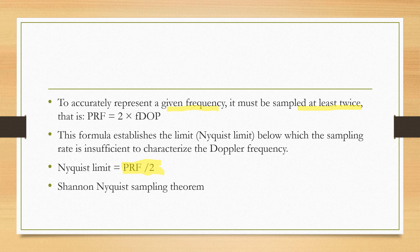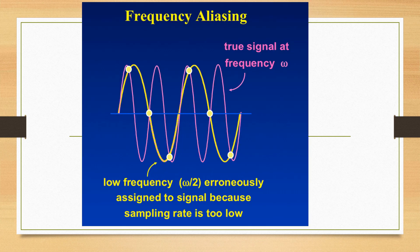What happens if the Pulse Repetition Frequency is low, or if we are sampling at a frequency lower than two times the signal frequency? For example, if we have a four hertz pink wave we are trying to recreate in Pulse Wave Doppler, we should sample it at least eight times. But if we sample it only five times, the sampling frequency is too low, and we erroneously get a waveform at a lower frequency. This is known as aliasing.